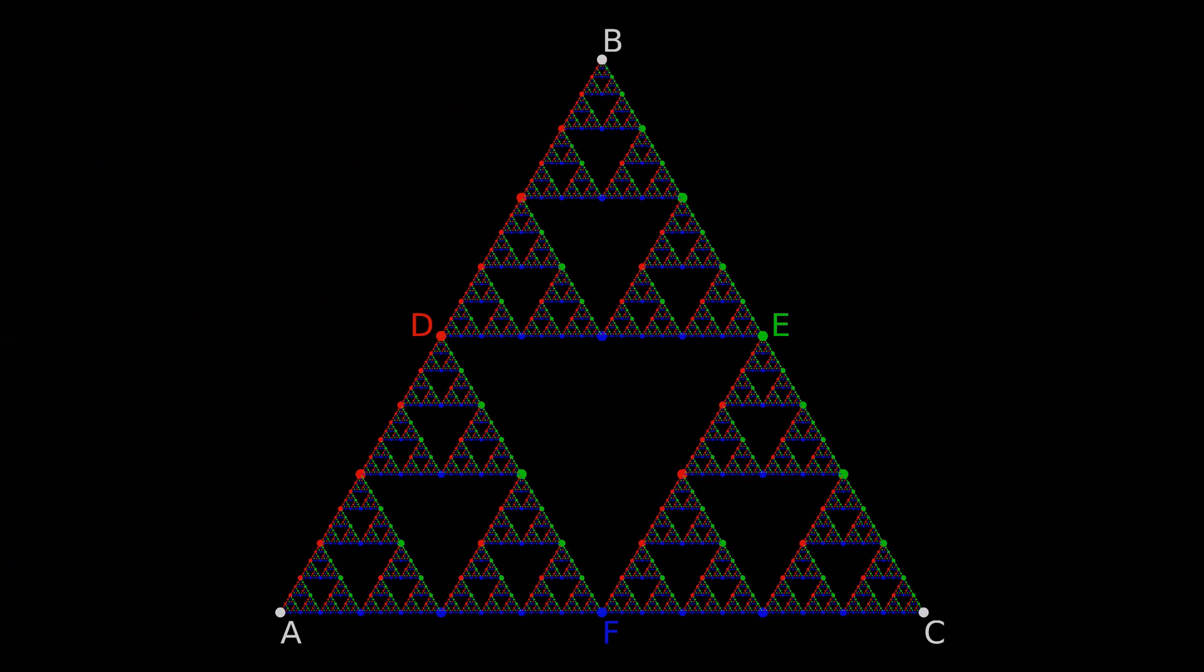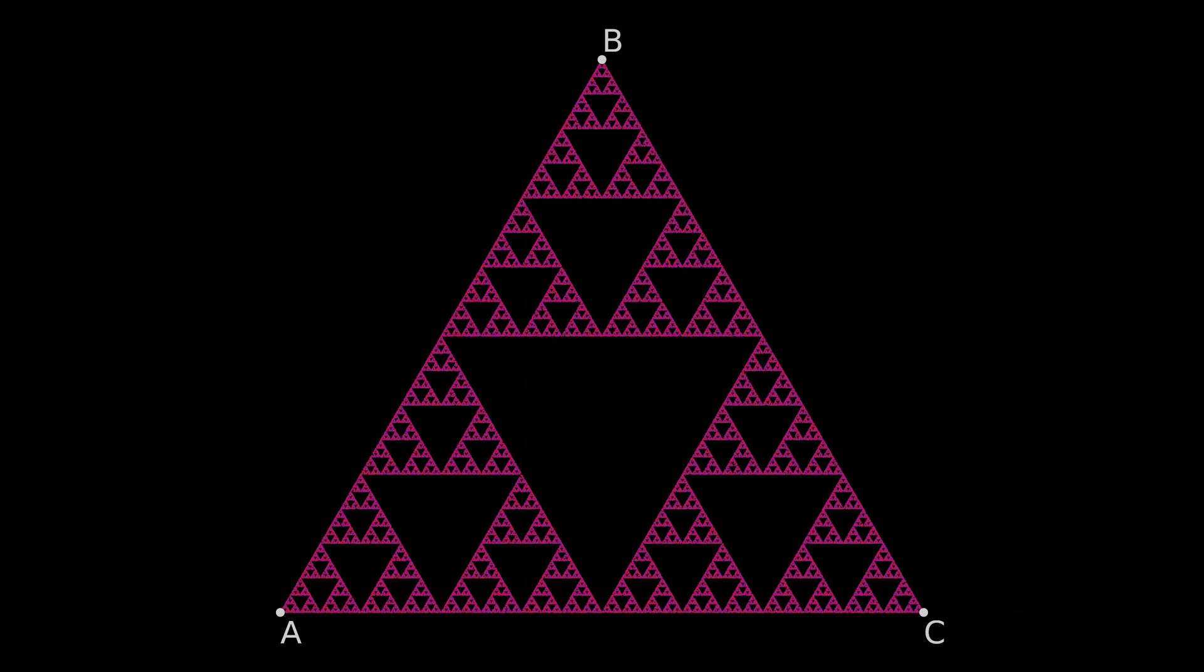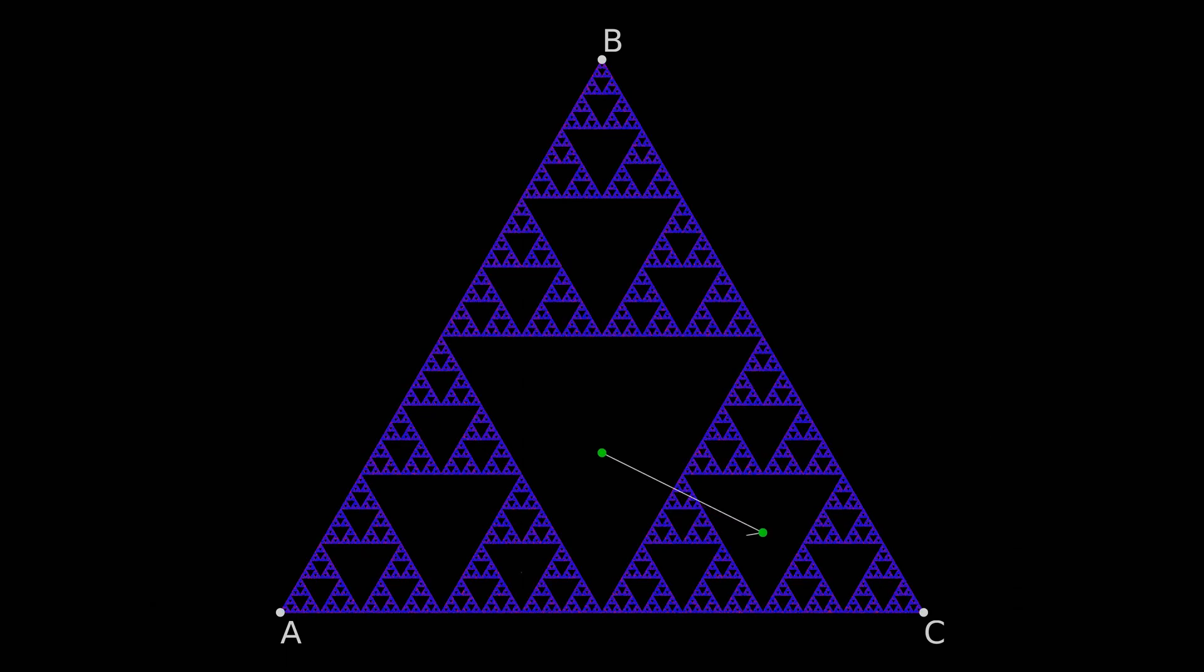The most common method people use to generate fractals with function systems is with a concept known as a chaos game. For this process, we start with a random point in space and allow the point to randomly pick any of the three functions it wants.